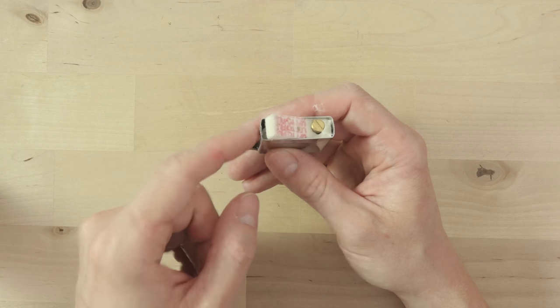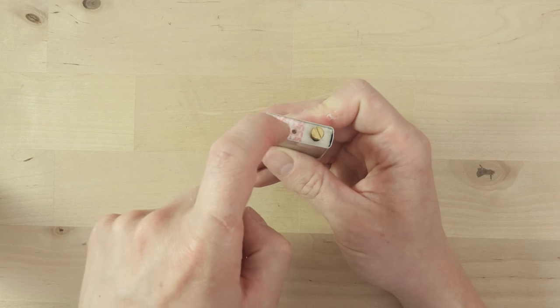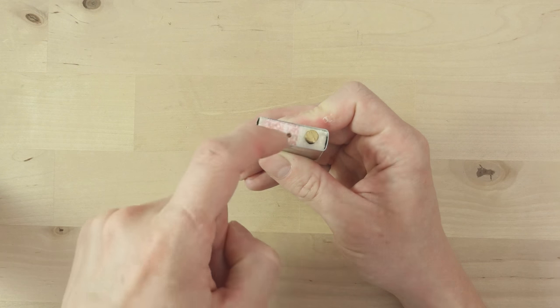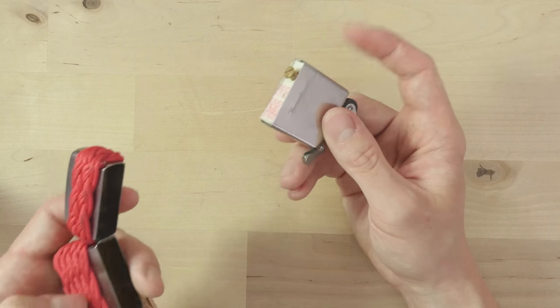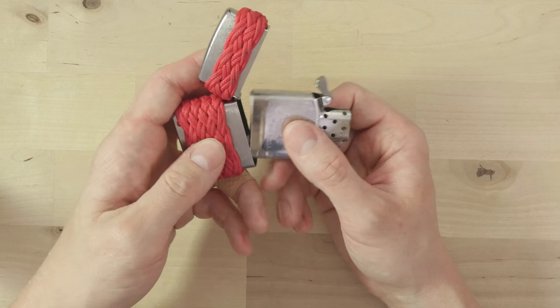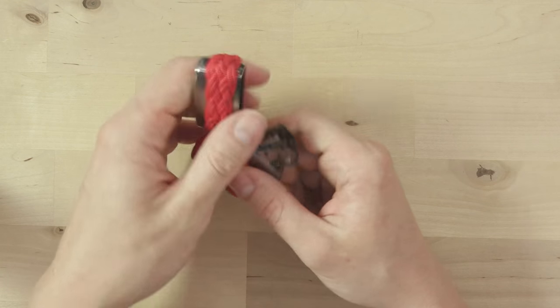When you have enough lighter fluid, close this felt padding and reinsert your insert back into the casing.